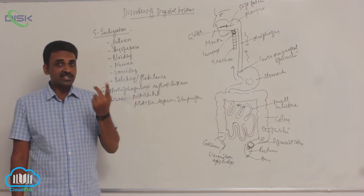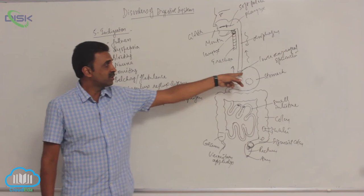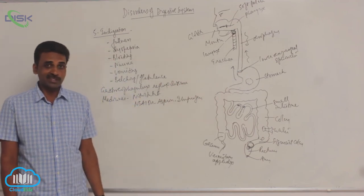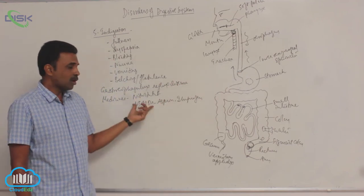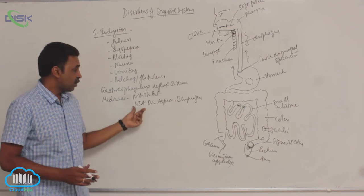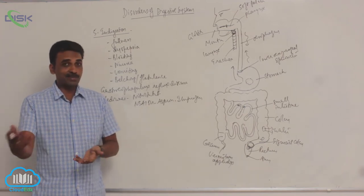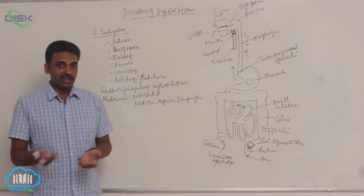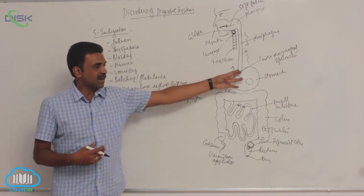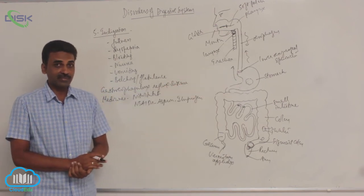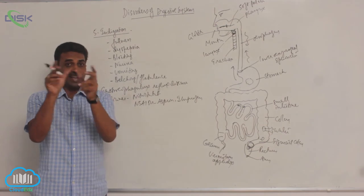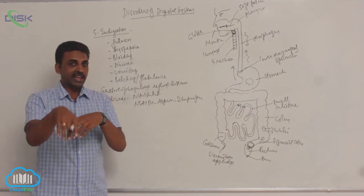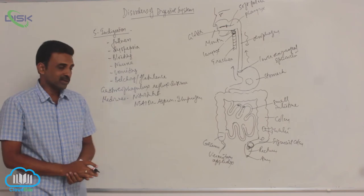These medicines cause relaxation of the lower esophageal sphincter. When non-steroidal anti-inflammatory drugs like aspirin and ibuprofen are taken, they cause relaxation of that sphincter. We take them to dilate blood vessels, but a side effect is the relaxation of the lower esophageal sphincter.